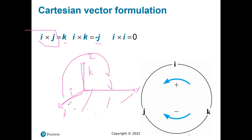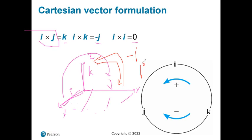Similarly, k cross j is negative because the perpendicular is i and the direction is reversed. Going from j to k gives positive i. This confirms that the cross product does not follow the standard commutative multiplication rule — the order of the vectors matters and affects the sign.